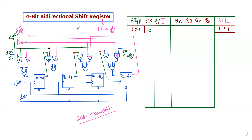In a shift register, data transfer follows shifting operations. The basic types of shifting operations are: left shifting, right shifting, rotate right, and rotate left. The fifth type is the bidirectional shift register, which performs both right shifting and left shifting.